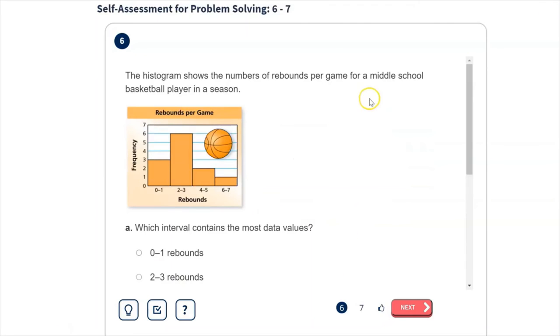Finally, this histogram shows the number of rebounds per game for a middle school basketball player in a season. So this is one student showing how many rebounds this student had each game. So this first question just asks which interval contains the most data values. So we can see two to three rebounds, there are six, so there were six games where this player had two to three rebounds. So that one obviously has the most data values.